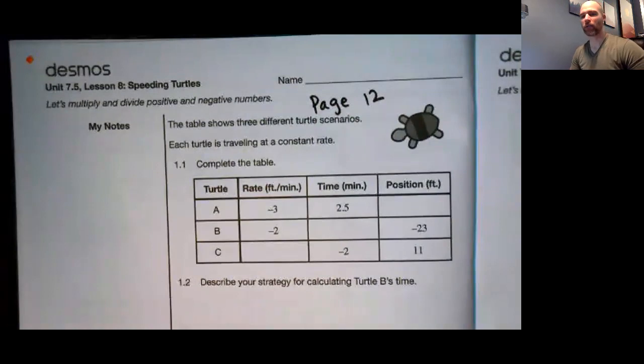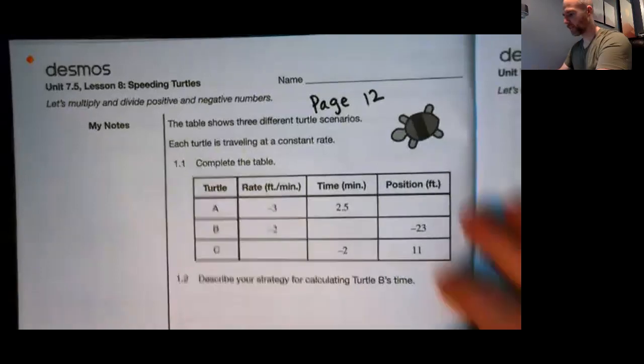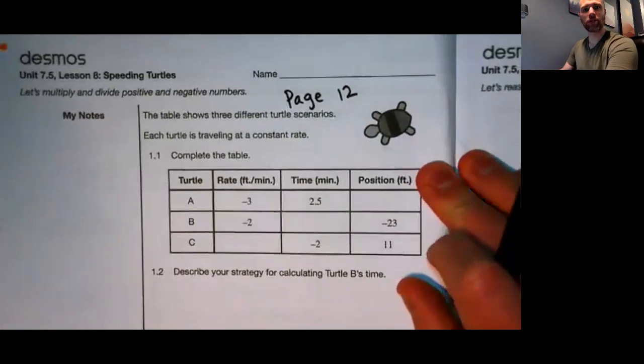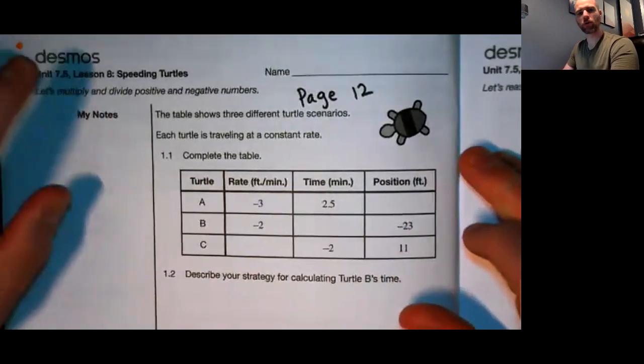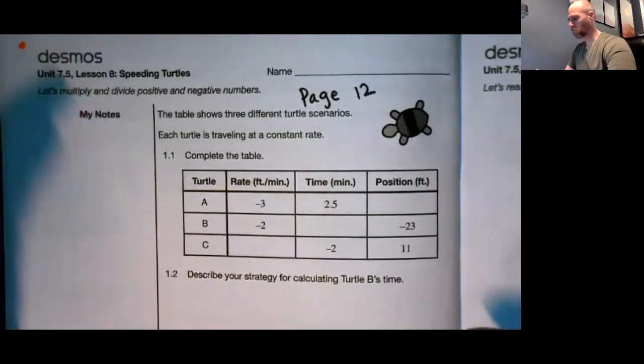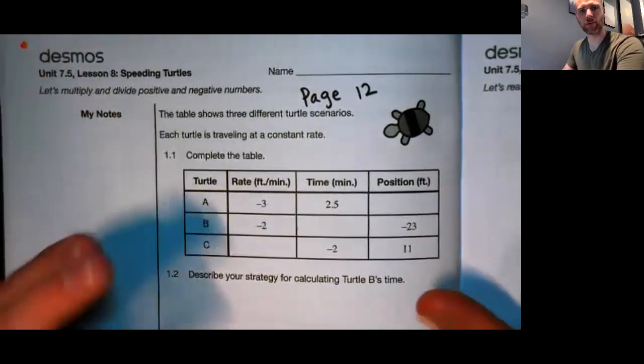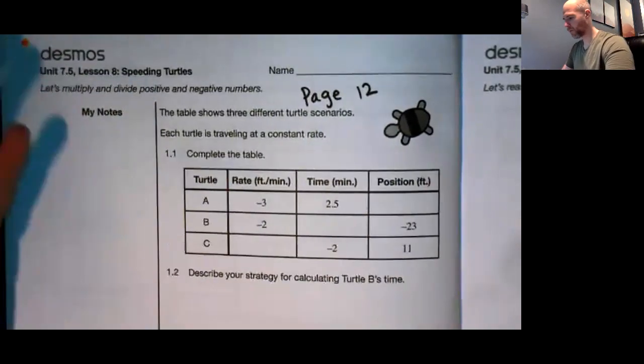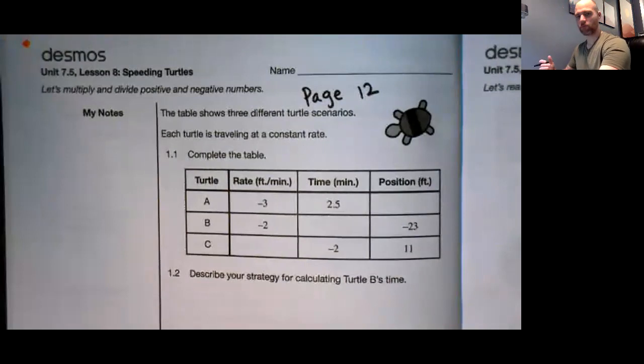If you already know the rules for multiplication in terms of a negative times a negative is positive, negative times positive is negative, all that stuff, well if you know those rules for multiplication, then you already know them for division because they're exactly the same. So let's look at this table that we have here on page 12. It kind of looks like proportional relationship tables.